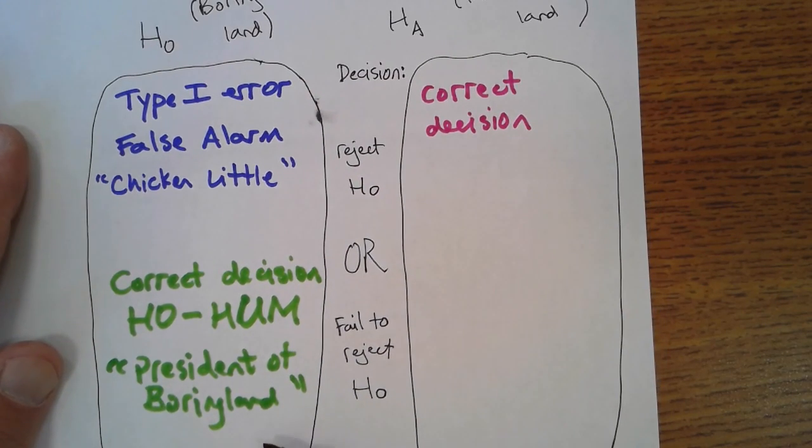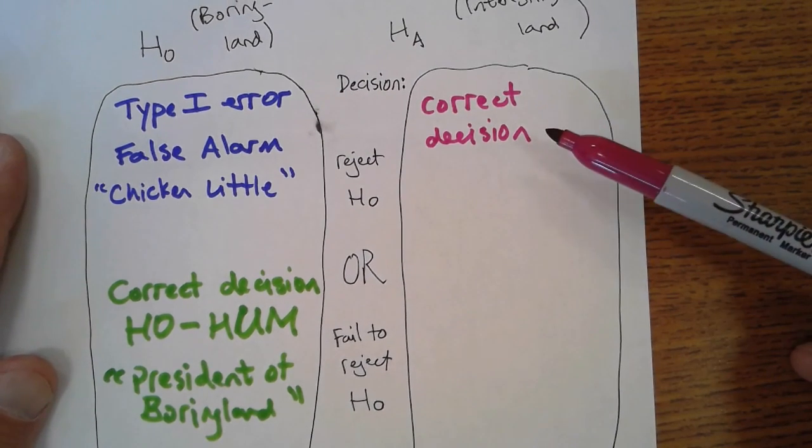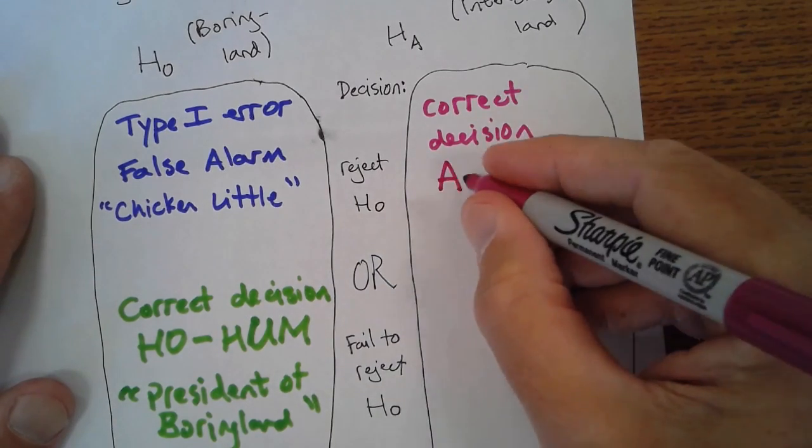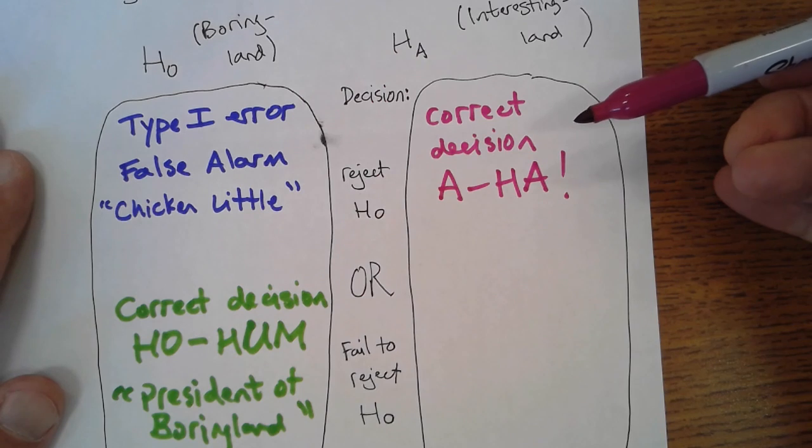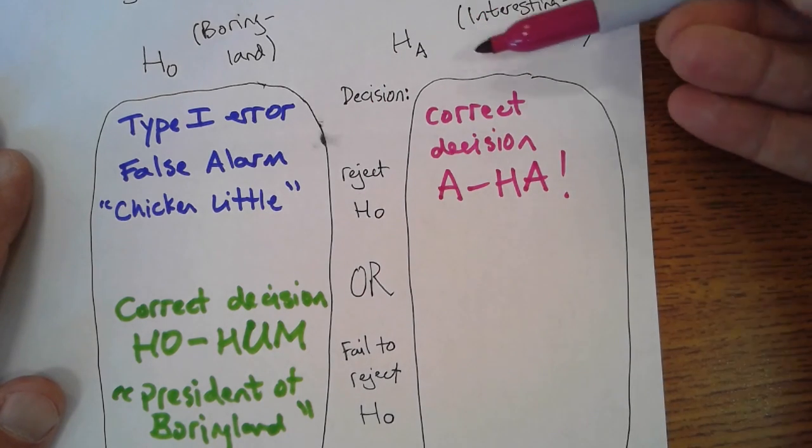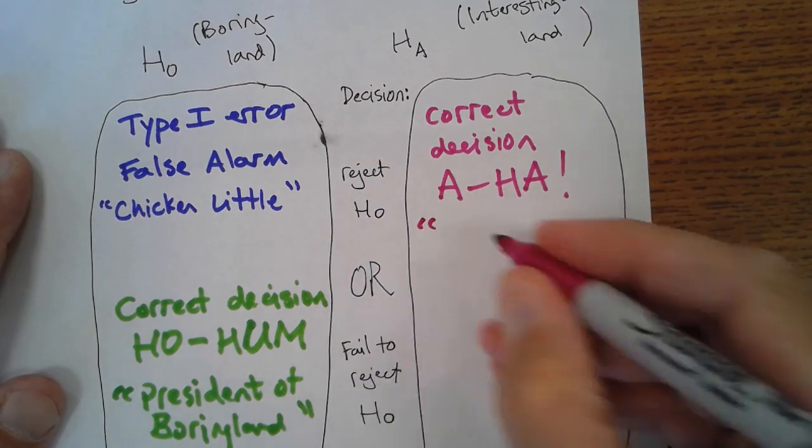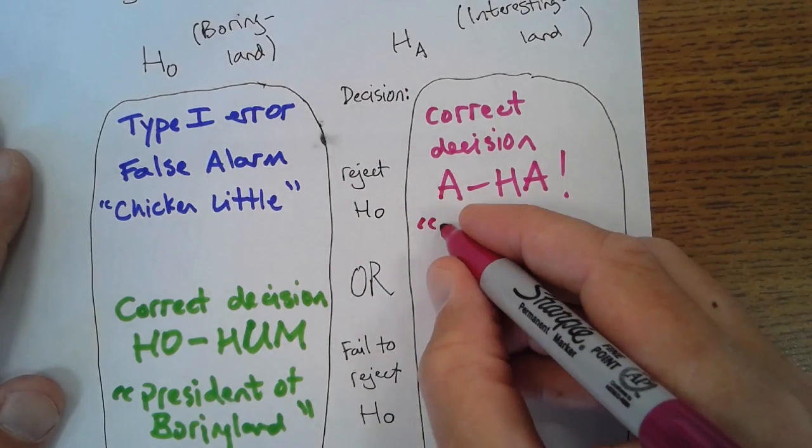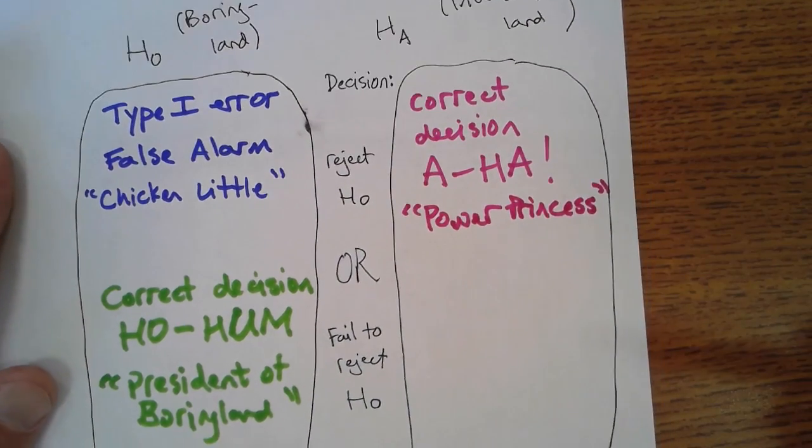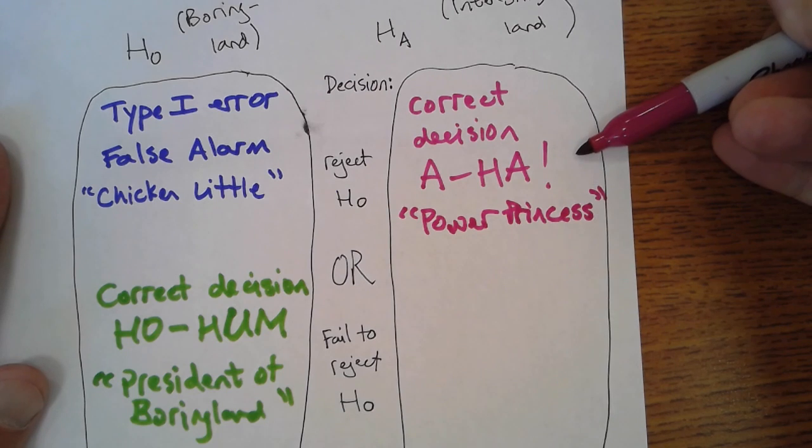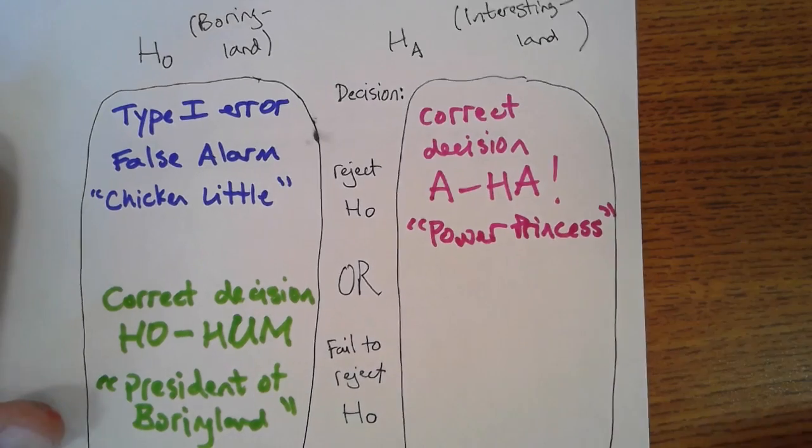But notice how different the character of this correct decision is from this one down here. This was the correct decision to not discover anything. That's pretty boring. This is a correct decision to say, hey, I've discovered something. Aha. This is really where you want to be. You always want to be up here. You do research hoping to reject the null in favor of the alternative hypothesis, and if you do that and this is the reality, then you're just great. The greatest character of all in this story is called Power Princess, and she corresponds to this outcome where everybody wants to be. You want to be here. You're doing research to try to reject the null, and if you do, and that's the correct decision, then you're happy.